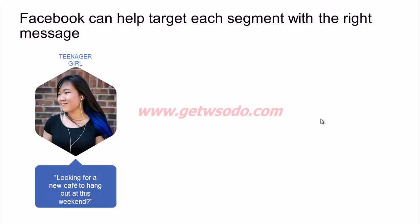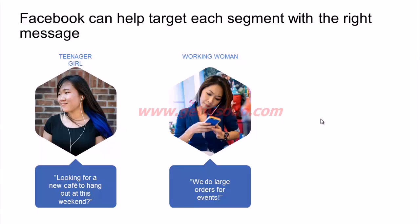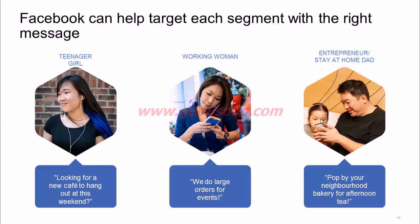For the teenage girl, the message could be something like: 'Looking for a new cafe to hang out at this weekend?' For the working woman, it could be a communication that says 'We do large orders for events,' since she works at an event management company and could be looking for outlets to satisfy large orders for her clients. For the stay-at-home dad within five kilometers of the store, it could be something specific like 'Your neighborhood bakery for afternoon tea.' This is how defining your audience right helps you craft messaging that gets the best returns from your Facebook ads.